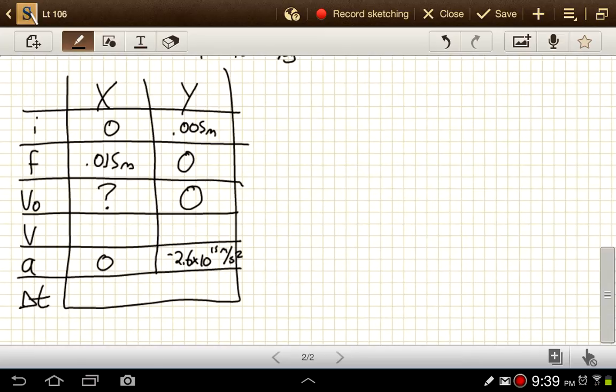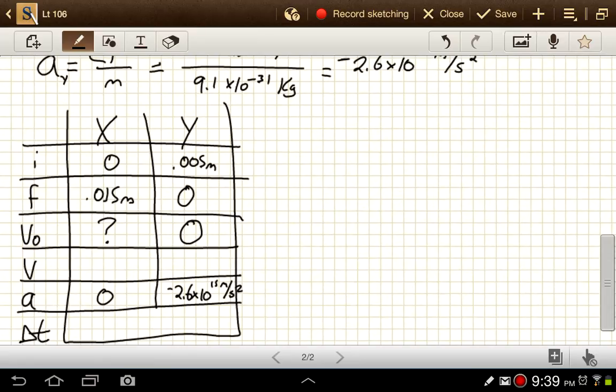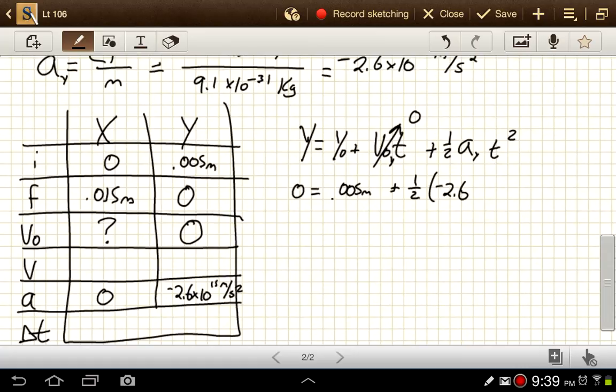So we'll use the y direction information first to get time, and then we can use that to get initial velocity. So in the y direction, we use the equation y equals y naught plus v naught t in the y direction plus 1/2 times acceleration in the y times t squared. This term goes to zero. Let's see, y is going to be zero equals 0.005 meters plus 1/2 times negative 2.6 times 10 to the 15th meters per second squared times t squared. And when we solve for t, so we'll subtract the 0.005 from both sides, multiply by 2, divide by negative 2.6 times 10 to the 15th. And then take the square root, and we'll get our time equal to 1.96 times 10 to the negative 9th seconds.